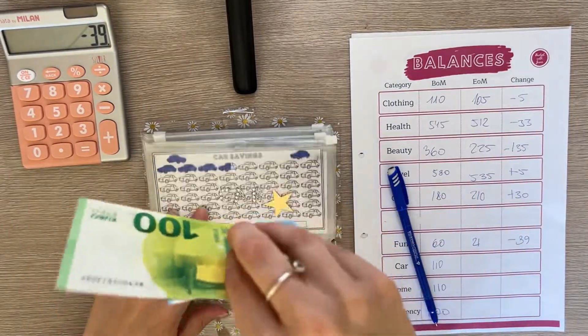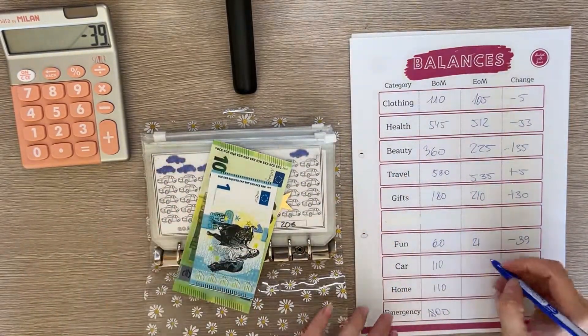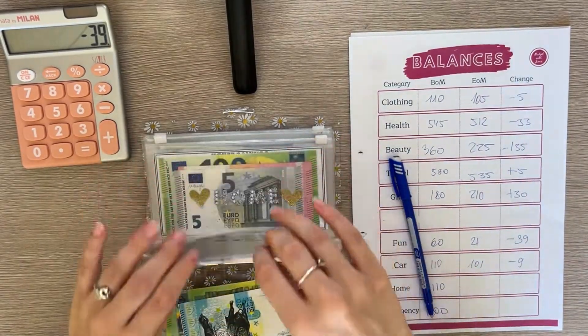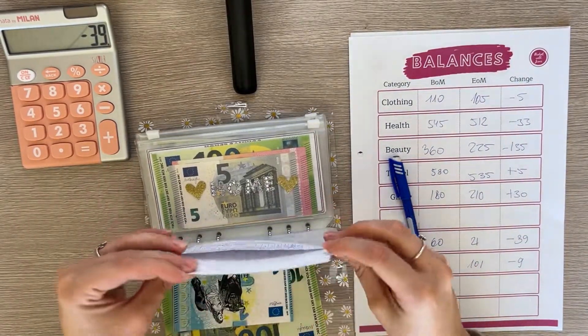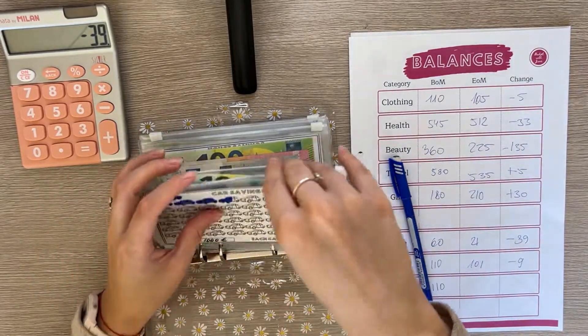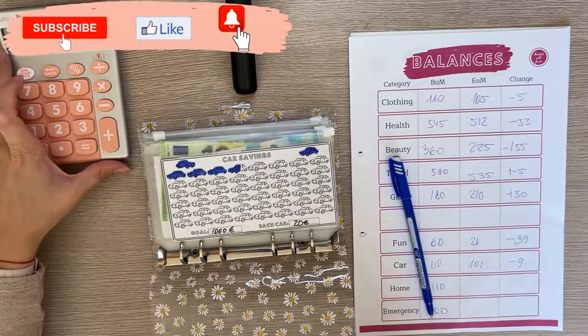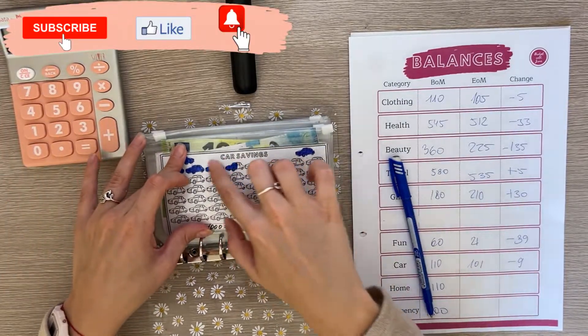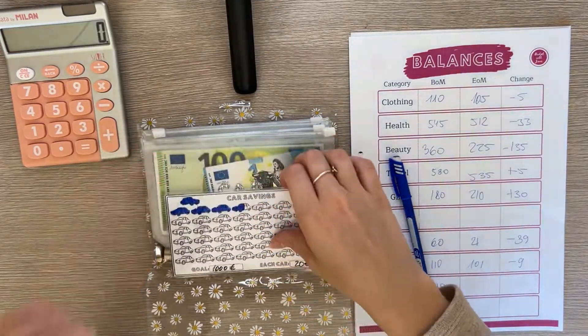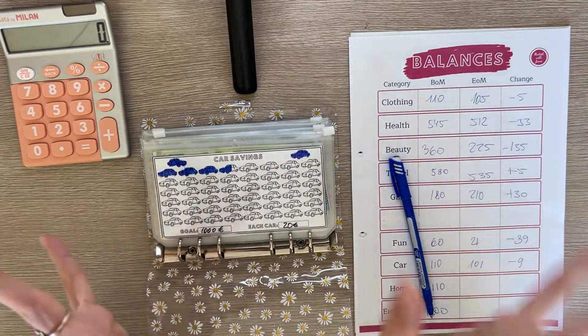That's all for this binder. Let's check out my long-term sinking funds binder. Car is first and it has $101 so we spent from this, it's a negative nine difference and I should update my trackers.